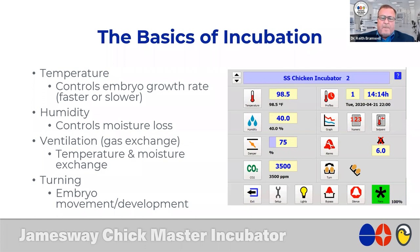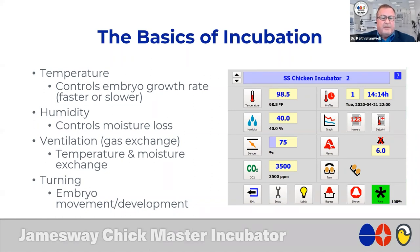When we look at the basics of incubation — and I show this in a lot of presentations — it really is just four simple things: we have to provide the proper temperature, the proper humidity, correct ventilation, and turning the eggs so the embryo moves within the egg and ventilation is altered throughout the cabinet. Temperature is what really controls the growth rate — faster or slower. So when we start seeing slow hatches, fast hatches, or a combination in the same day's hatch, we look back at what happened with our temperature.